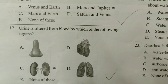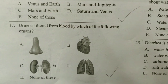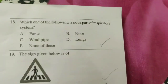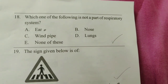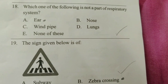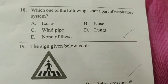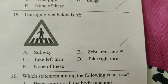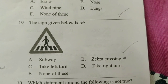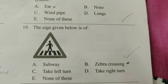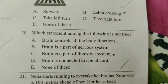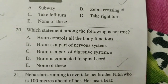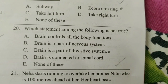Question 17: Urine is filtered from blood by which organ? The answer is C — kidney — from Chapter 4. Question 18: Which one among the following is not a part of the respiratory system? The answer is A, from Chapter 4. Question 19: The sign given below is for — the answer is B — zebra crossing. Question 20: Which one among the following is not true? The answer is C, from Chapter 4.